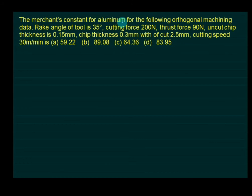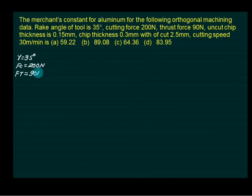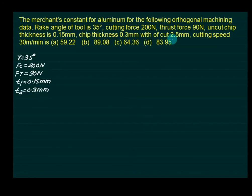For the next problem, we find the Merchant constant for aluminum using orthogonal machining data. The rake angle gamma is 35 degrees, cutting force Fc equals 200 N, thrust force Ft equals 90 N, uncut chip thickness T1 equals 0.15 mm, chip thickness T2 equals 0.3 mm, width of cut B equals 2.5 mm, and cutting speed is 30 m/min.